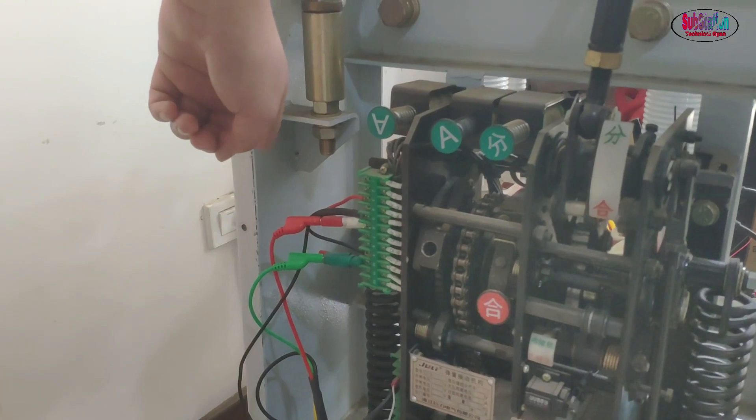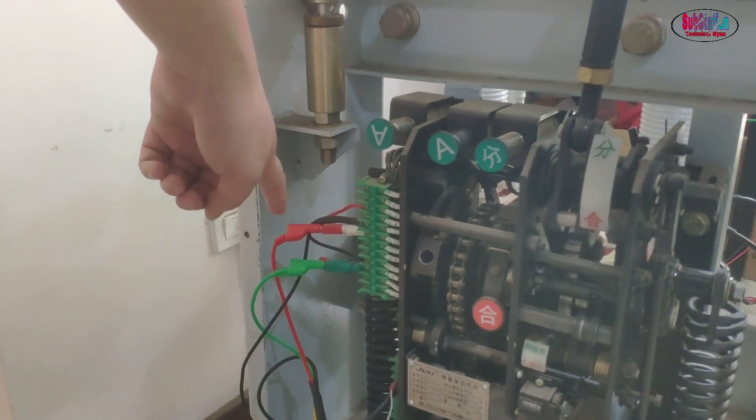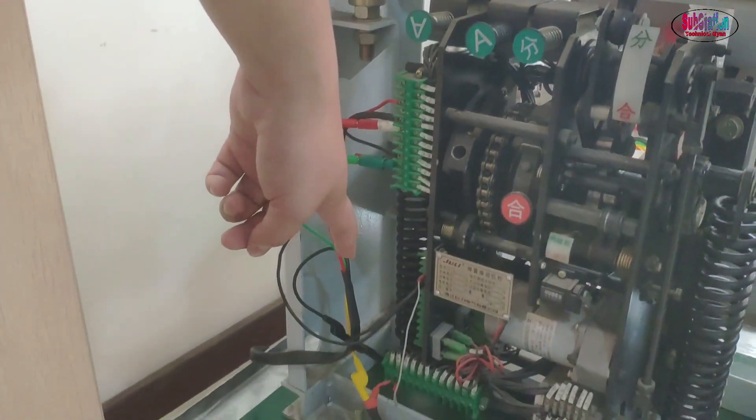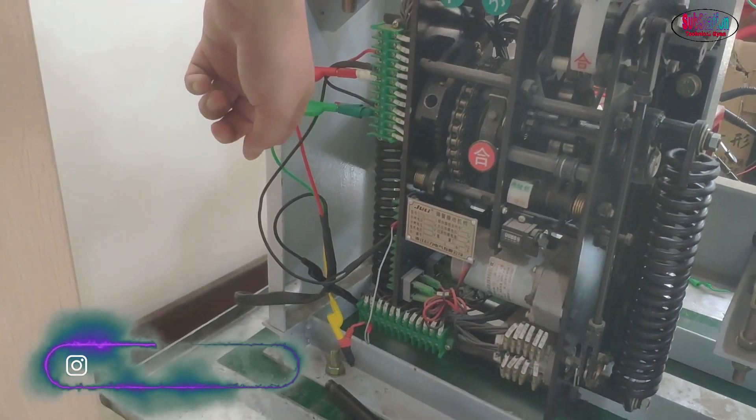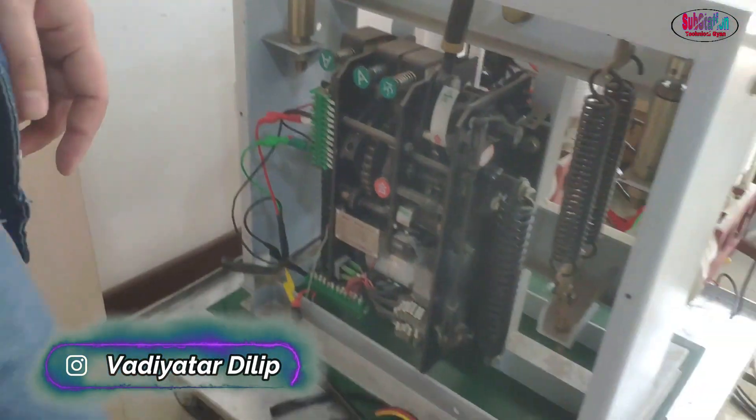The red one is for the closing and the green one is for the opening. Yellow one is for the energy storage and the black one is for the common part.